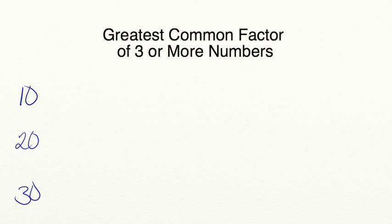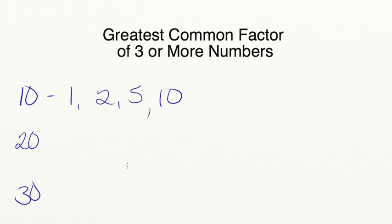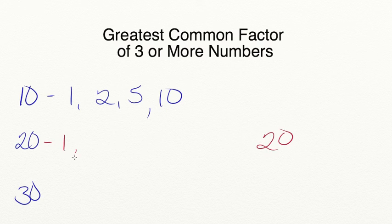I need to list out all of the factors for each of those numbers. Starting with the number 10: we know we can multiply 1 times 10 to equal 10, and 2 times 5 to equal 10. Now for the factors of 20: we can multiply 1 times 20, 2 times 10, and 4 times 5.